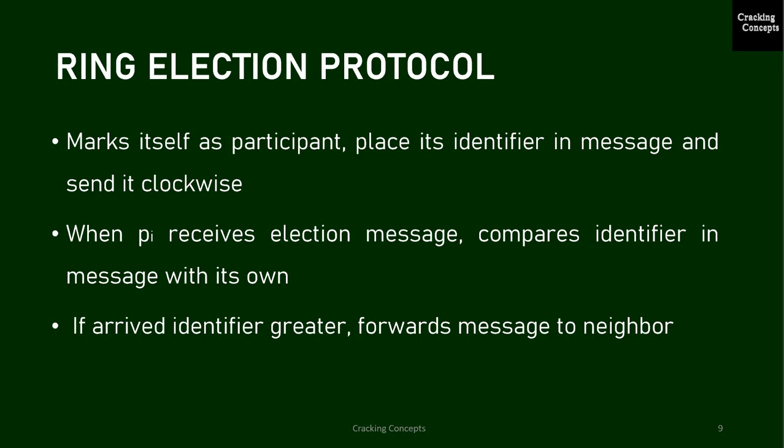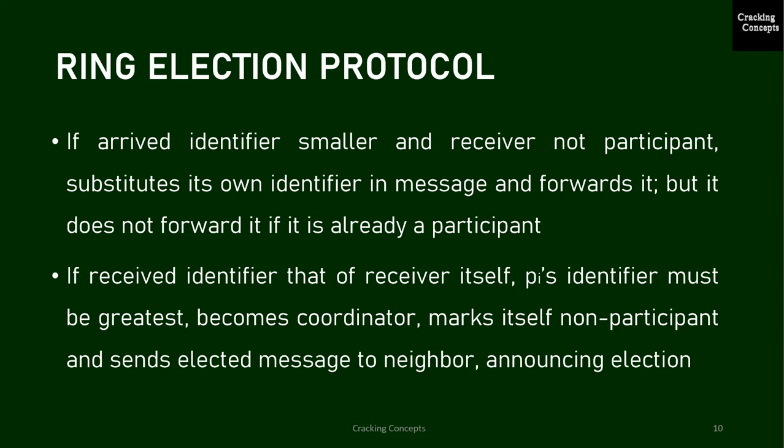Looking at the ring election protocol: initially every process is marked as a non-participant. Any process can begin an election by marking itself as a participant, placing its identifier in an election message, and sending it clockwise. When a process receives an election message, it compares the identifier in the message with its own. If the arrived identifier is greater, it forwards the message to its neighbor. If the arrived identifier is smaller and the receiver is not a participant, it substitutes its own identifier in the message and forwards it. However, it does not forward the message if it is already a participant. In any case, on forwarding an election message, the process marks itself as a participant.